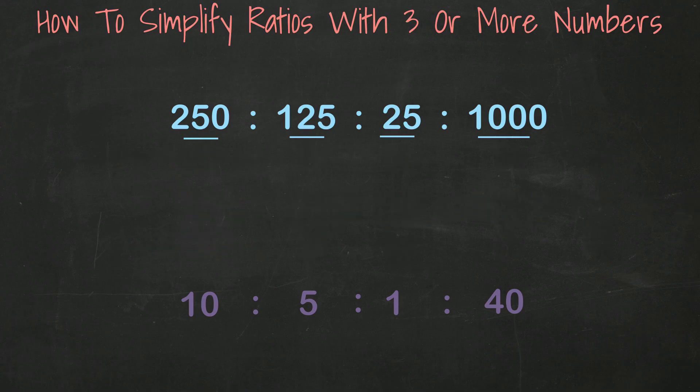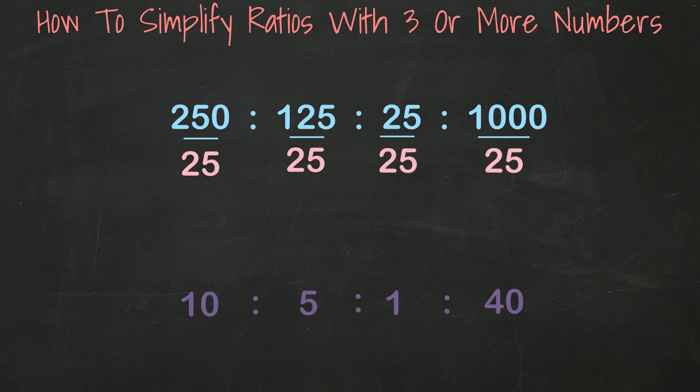If we look at our original ratio and divide each one by 25, let's see what we get. 10 to 5 to 1 to 40.